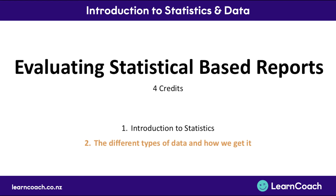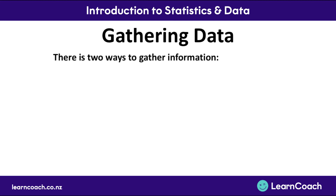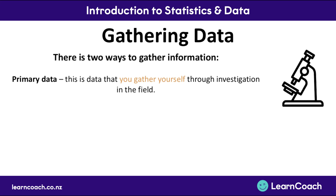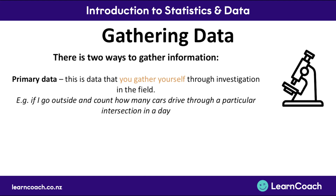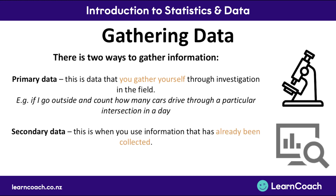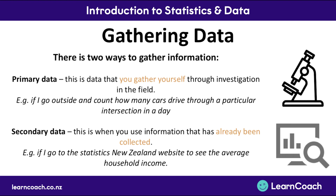Now we'll cover the different types of data and how we get it — this doesn't come up very often in exams so we'll go through it quickly. There are two ways to gather information. The first is data you gather yourself through investigation in the field, which is called primary data. For example, if I go outside and count how many cars drive through a particular intersection in a day, that data is primary data. The other way is to use information that's already been collected, called secondary data. For example, going to the Statistics New Zealand website to find the average household income — someone else collected that data, so it's secondary data.